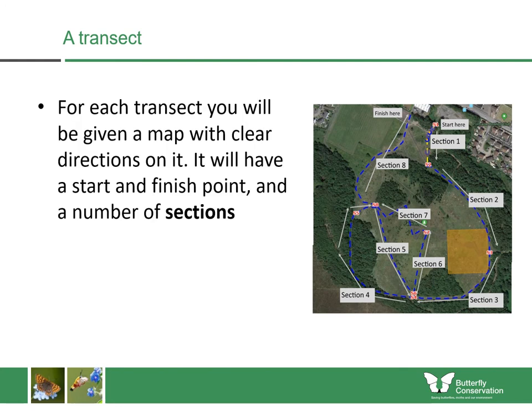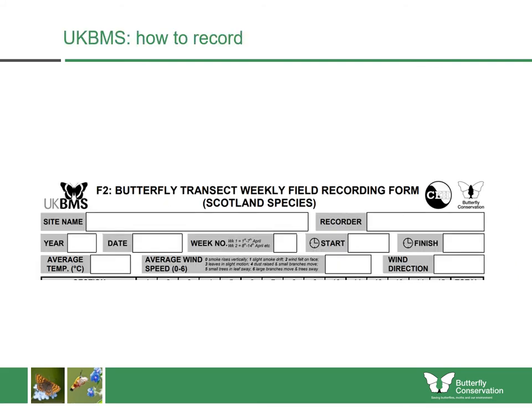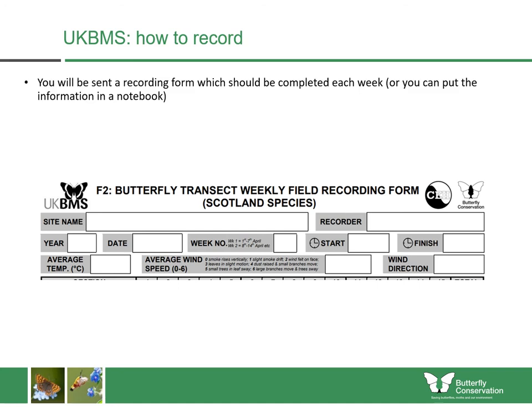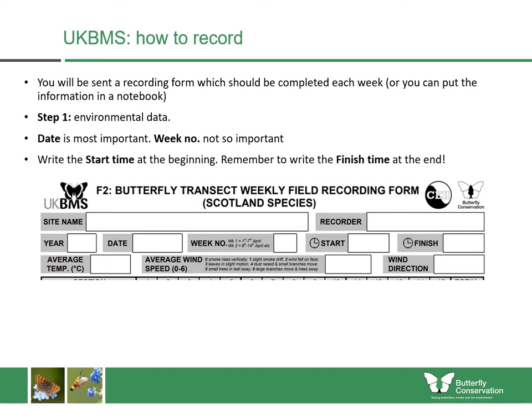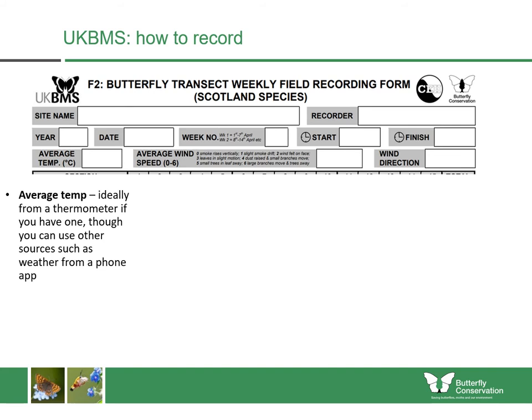The transect is a route broken up into a number of sections, which may differ in length and pass through different habitats. It has a map with a clear start and finish point, telling you where each section starts and ends. At the top of the recording form you record the date, start and finish time — these are essential — along with average temperature, ideally taken with a thermometer you carry, though a phone weather app can be used.